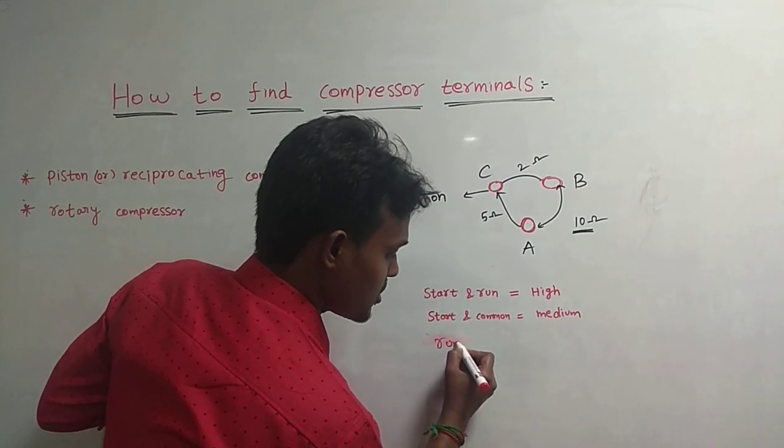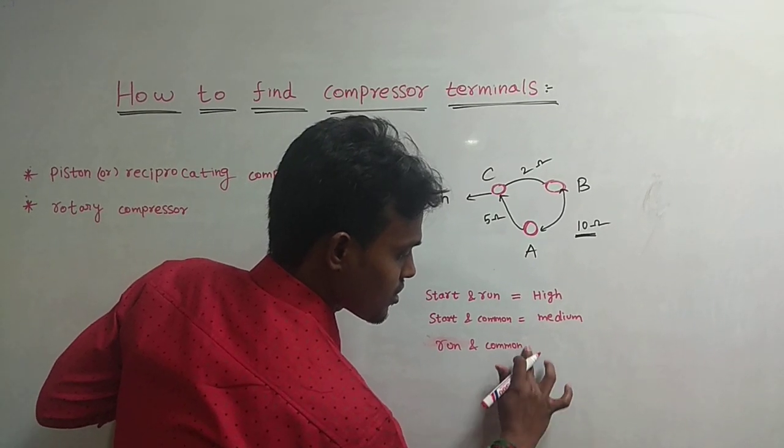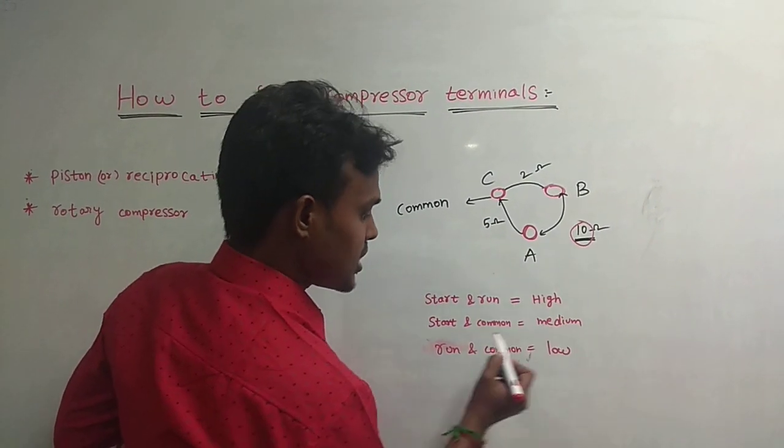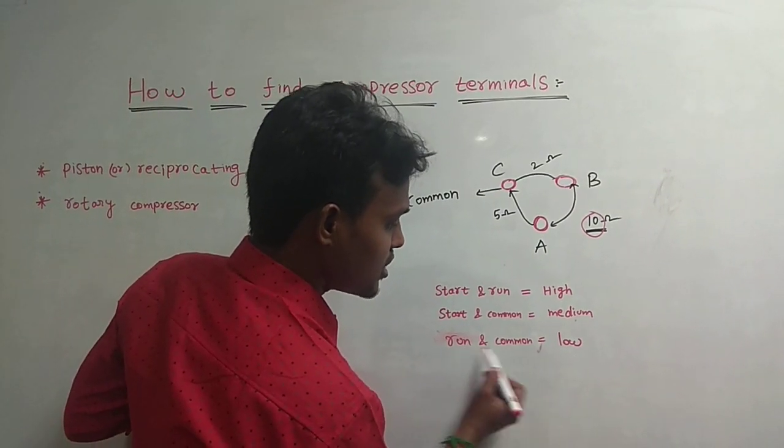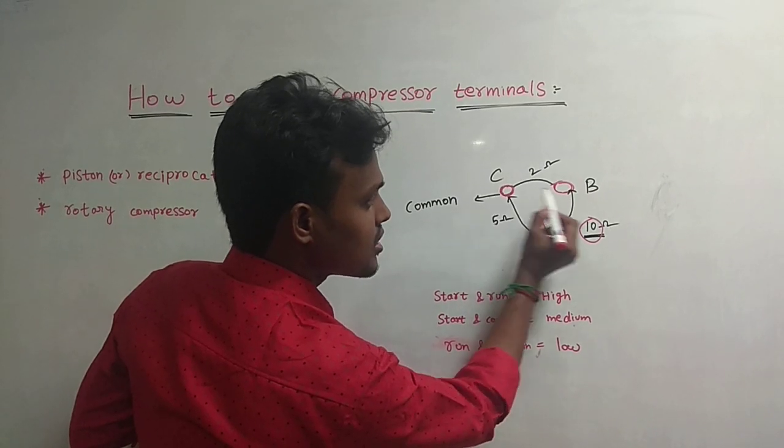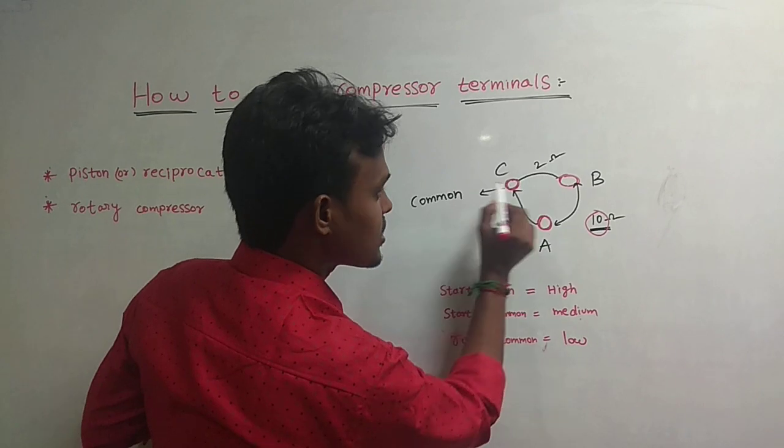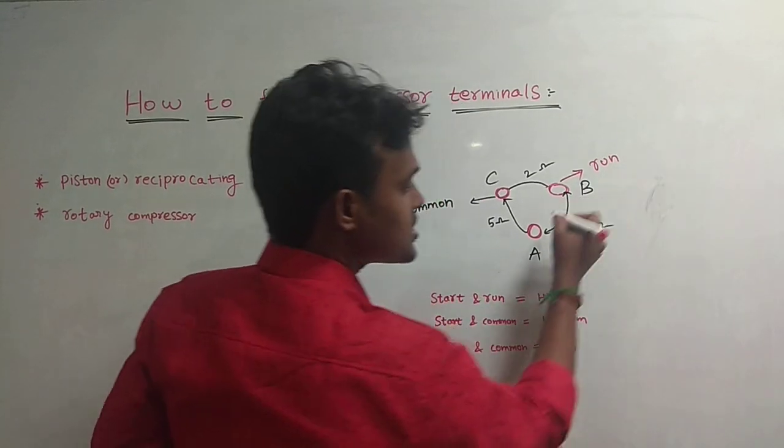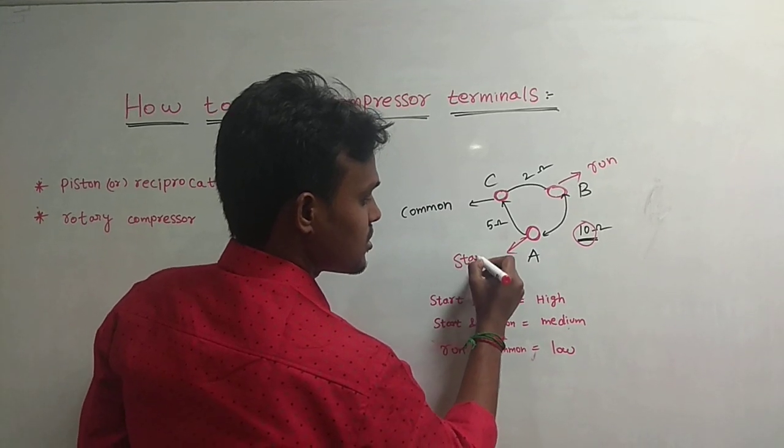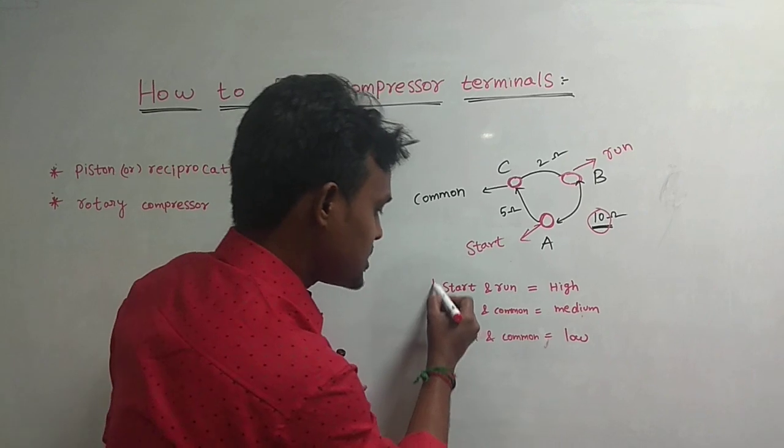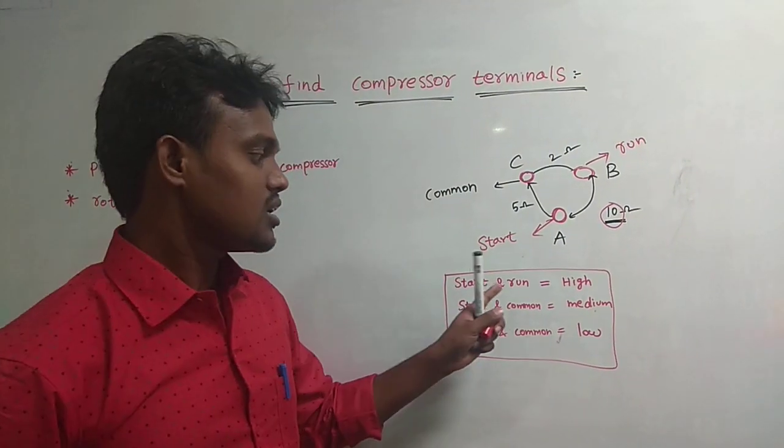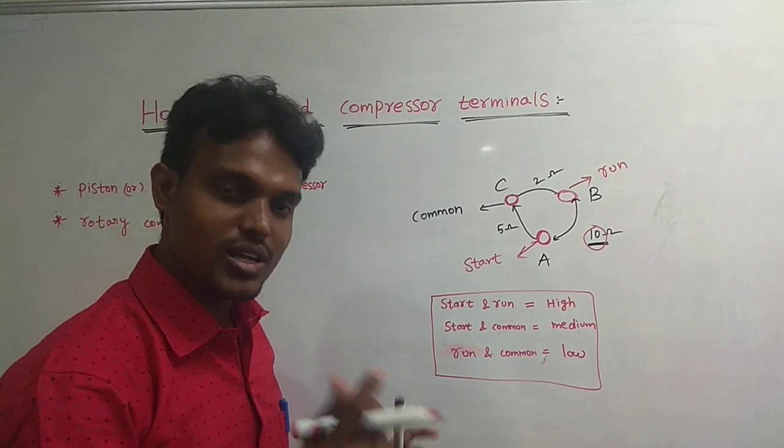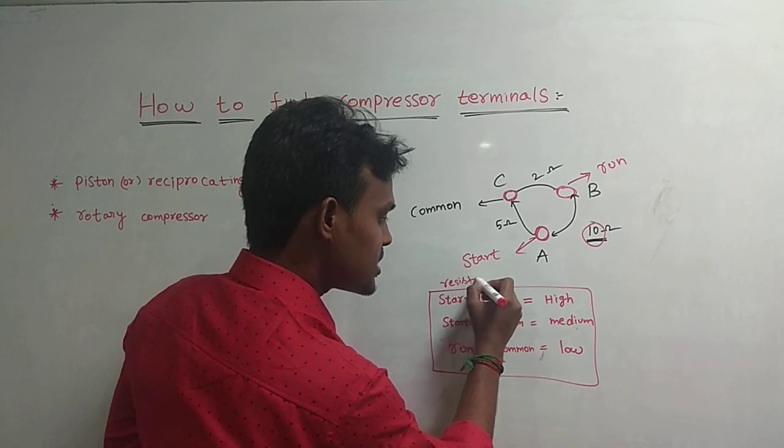Run terminal and common terminal, this is low. So start and run, high. Start and common, medium. Run and common, low. Run terminal, start terminal. Start resistance value high, medium resistance value, resistance value low.